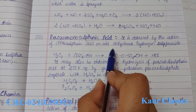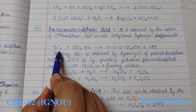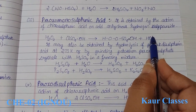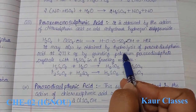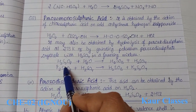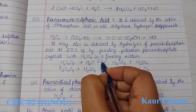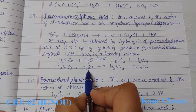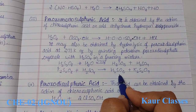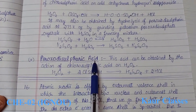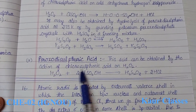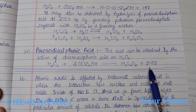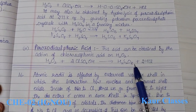Peroxomonosulfuric acid (H2SO5) is obtained by the action of chlorosulfuric acid on cold anhydrous hydrogen peroxide, producing peroxomonosulfuric acid and liberating HCl. It may also be obtained by hydrolysis of peroxodisulfuric acid at 273 K, or by grinding potassium peroxodisulfate with crystals of sulfuric acid in a freezing mixture. Peroxodisulfuric acid can also be formed by the action of chlorosulfuric acid with hydrogen peroxide.